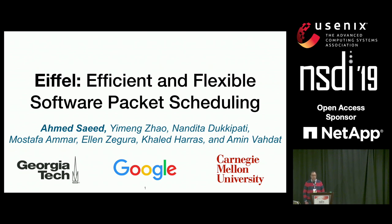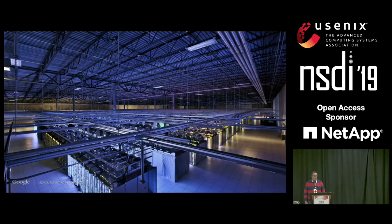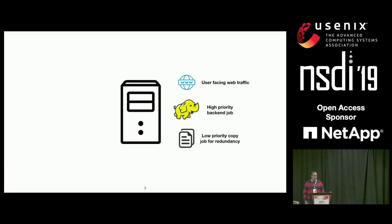Before I tell you about the details of the work, let me give you a little bit of context. This work can be implemented in multiple settings, but let's focus on the data center setting — specifically on just one machine in the data center. In modern data centers, servers will be pushing multiple types of traffic: user-facing high-priority web traffic, high-priority back-end traffic, and lower-priority copy traffic, for instance for replication.